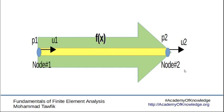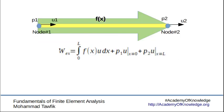Let's consider a bar element with distributed force f(x) and end forces p1 and p2. We start by writing down the expression for the external work done. It will be due to the two concentrated forces: p1 multiplied by the deflection at node 1 at x=0, and p2 multiplied by the deflection at node 2 at x=L. For the distributed force, it becomes the integration of the distributed force times the deflection at every point over the domain. Remember, work done by any force equals the force value multiplied by the distance moved by its point of application.